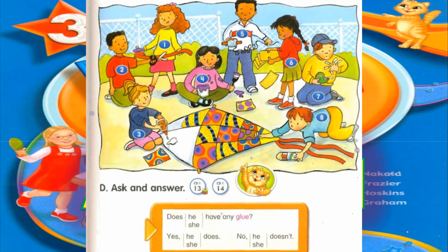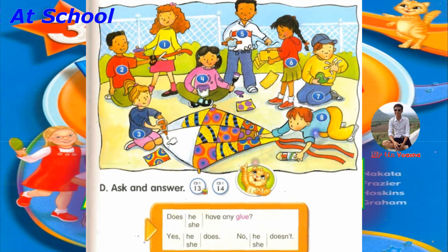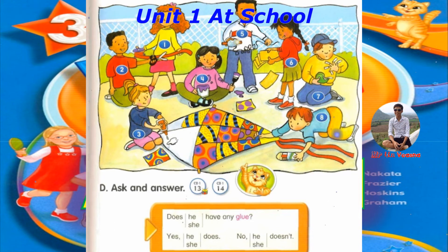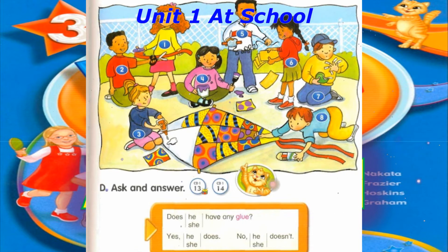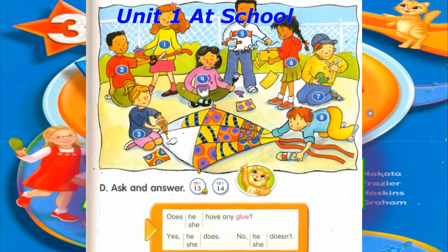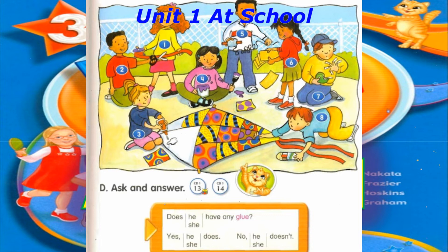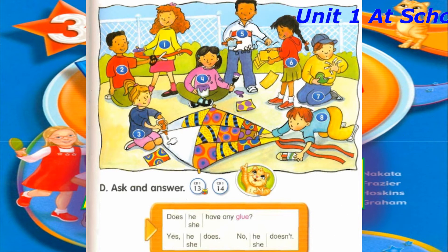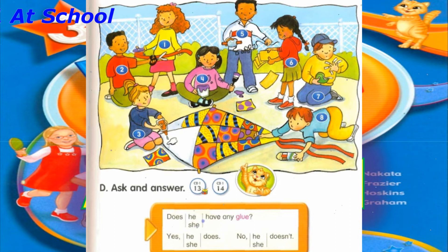Number 2: Does he have any ribbon? No, he doesn't. Number 3: Does she have any glue? Yes, she does. Number 4: Does she have any glue? No, she doesn't.